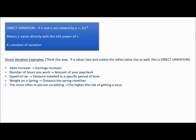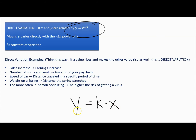Another example: the more in-person socializing, the higher the risk of a virus. All of these are direct variation. The formula for direct variation is: the first variable equals k — the constant of variation — times the other variable. These variables might not be called x and y; they could be called R and D or something else. Direct variation is multiplication: you multiply the constant of variation k times the x value.